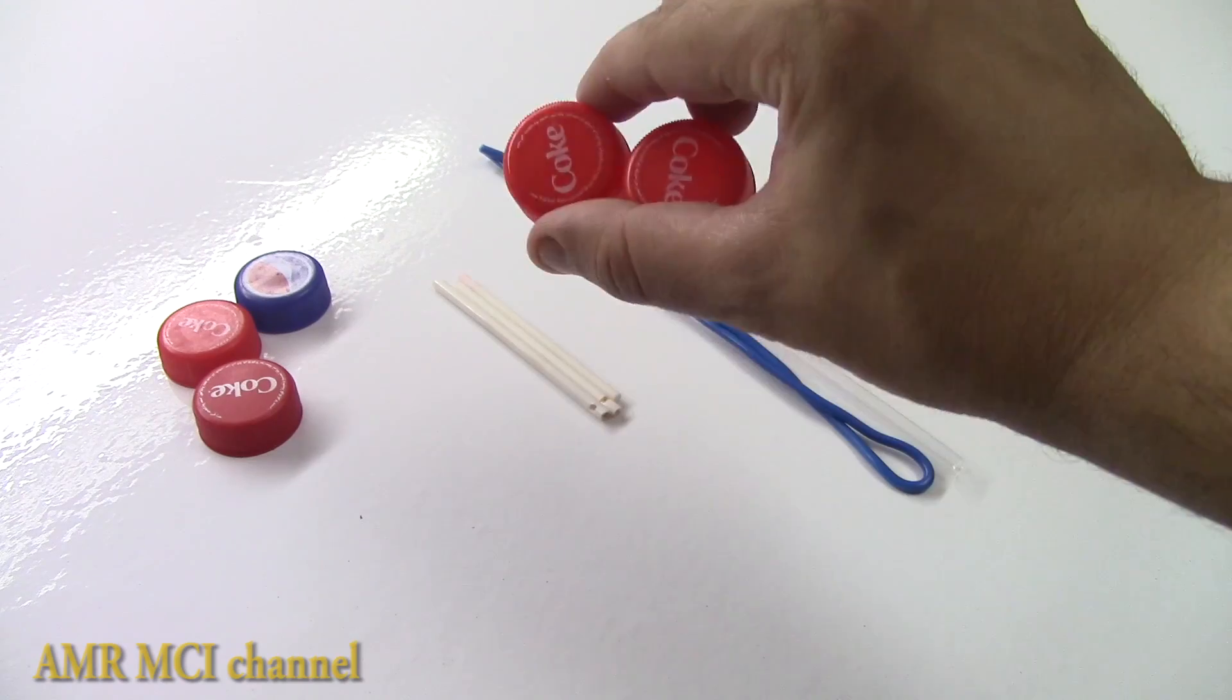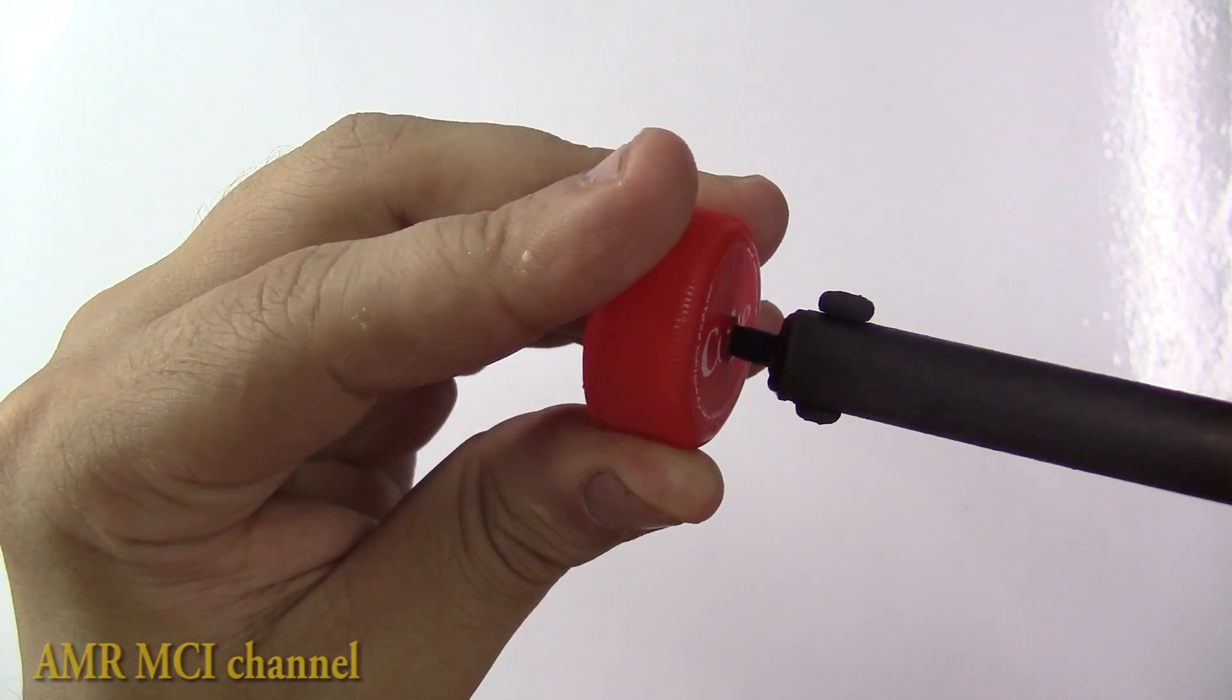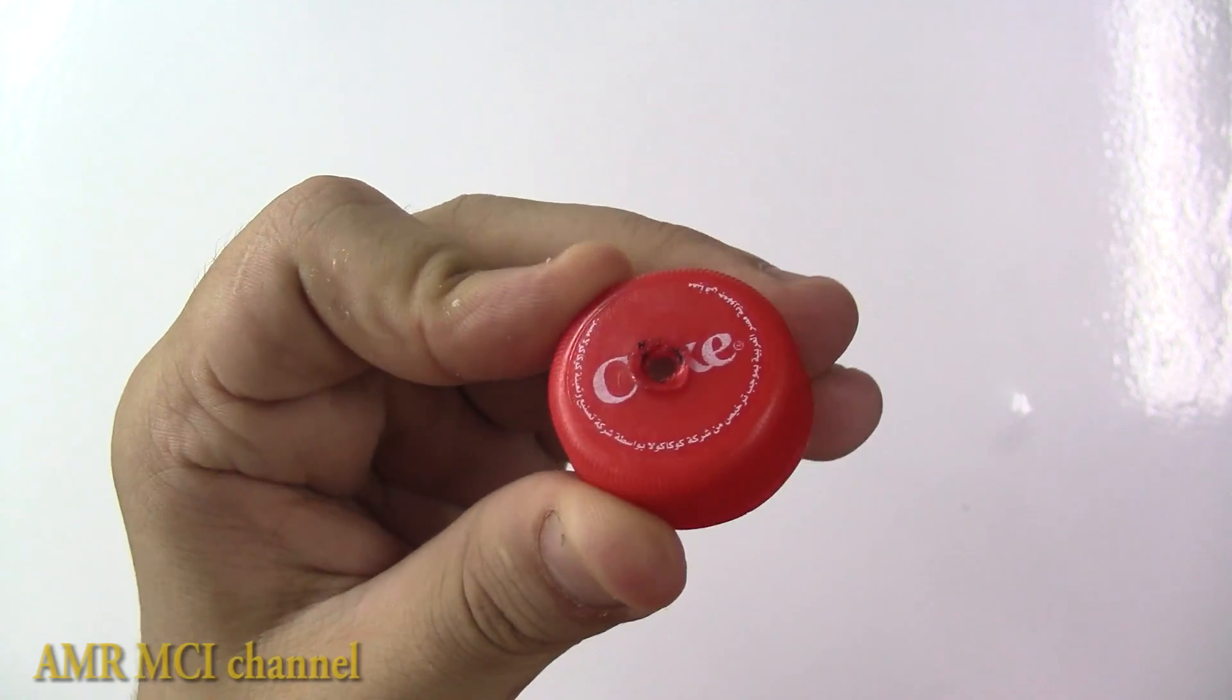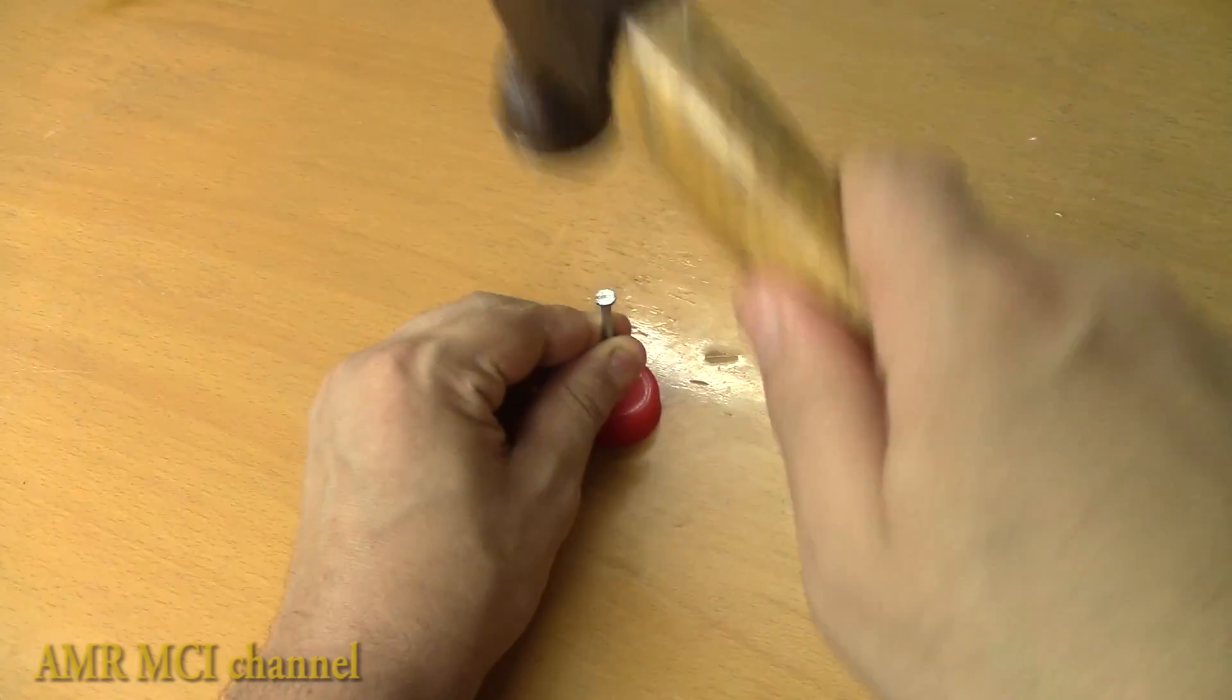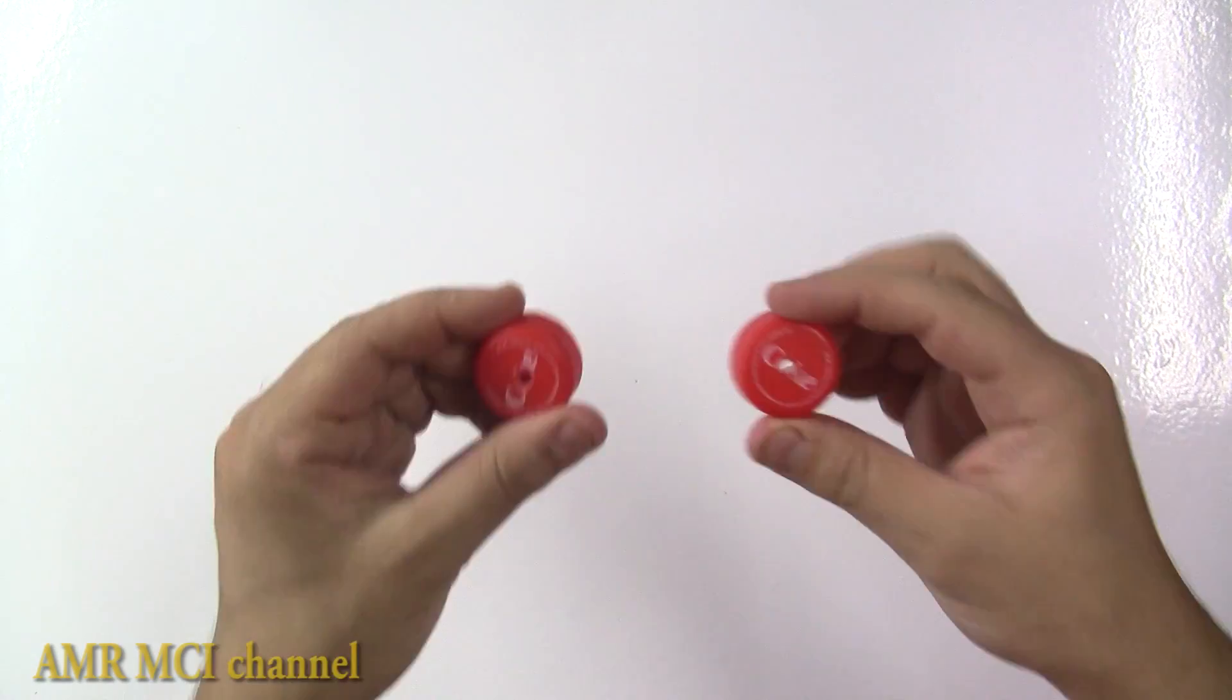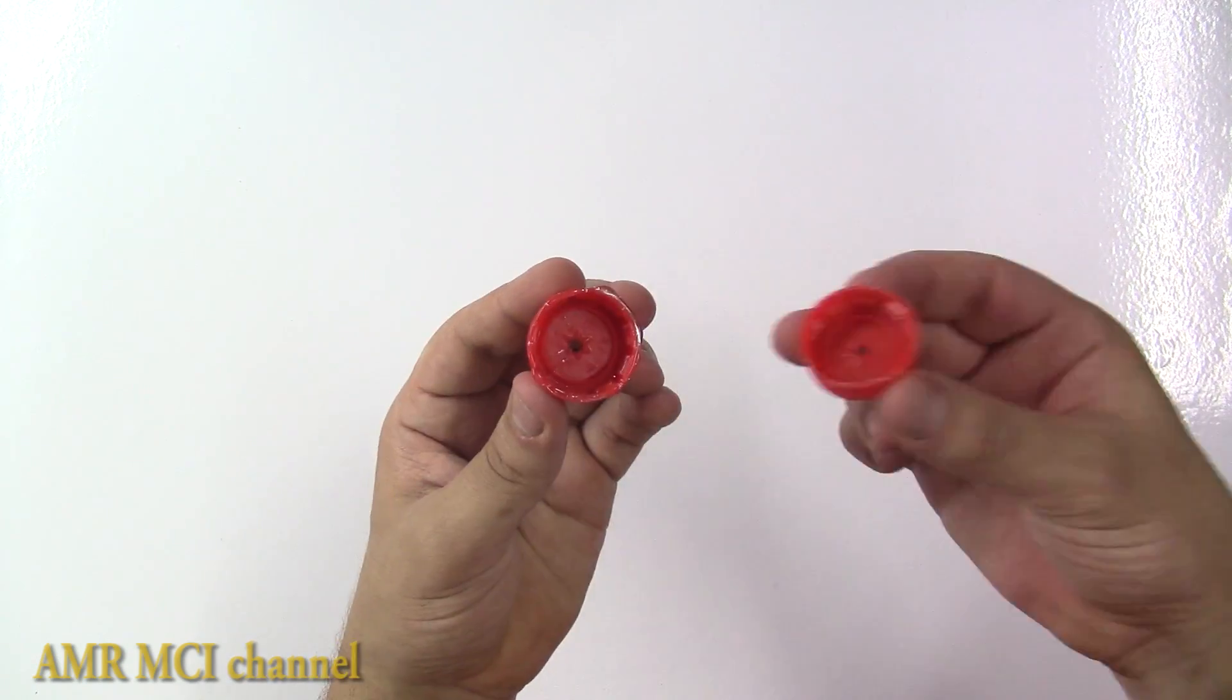Start by taking two bottle caps. You'll notice there's a tiny spot in the middle you can use as a mark to burn a hole exactly into the center using a soldering iron. If you don't have a soldering iron, a nail and hammer will work as well. After drilling each cap, glue both caps together, then remove any excess glue on the outside. Now you have the first wheel.